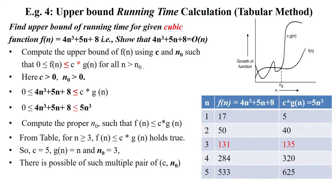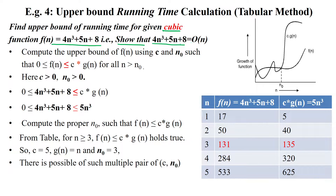Welcome to upper bound running time calculation using the tabular method. Here we are having the cubic function f(n) equal to 4n³ + 5n + 8. This can be asked as: show that 4n³ + 5n + 8 equals Big O of n³.